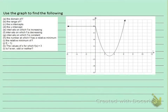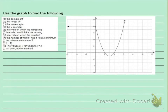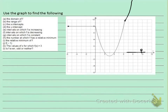We look at the graph on the right, and they're asking us a series of questions about this graph. The first question is: what's the domain of f? The domain is all of your x values — how far to the left and how far to the right does this graph go? It goes to the left with an arrow, so it goes to negative infinity, and it keeps going to the right forever. So the domain is from negative infinity to positive infinity.